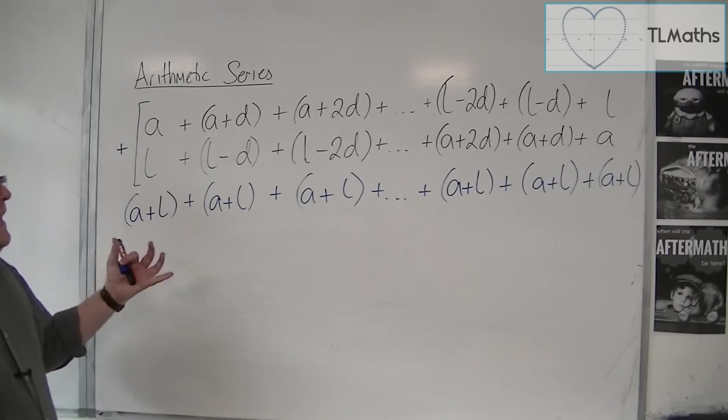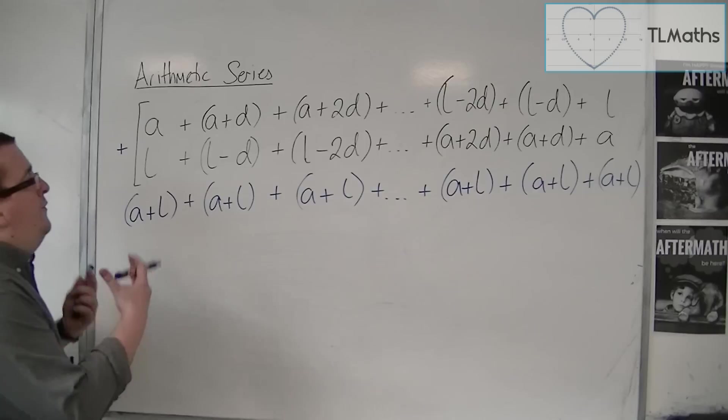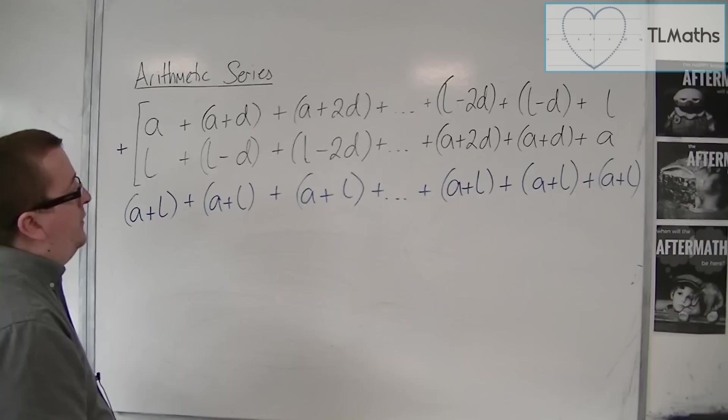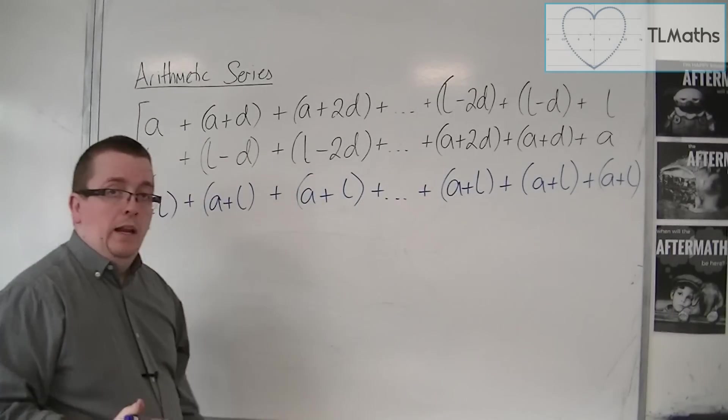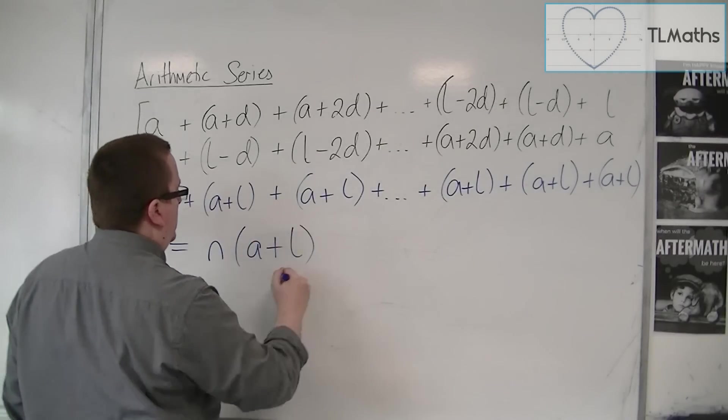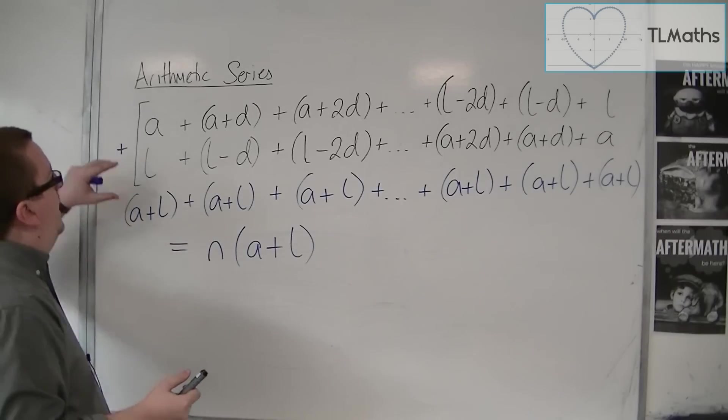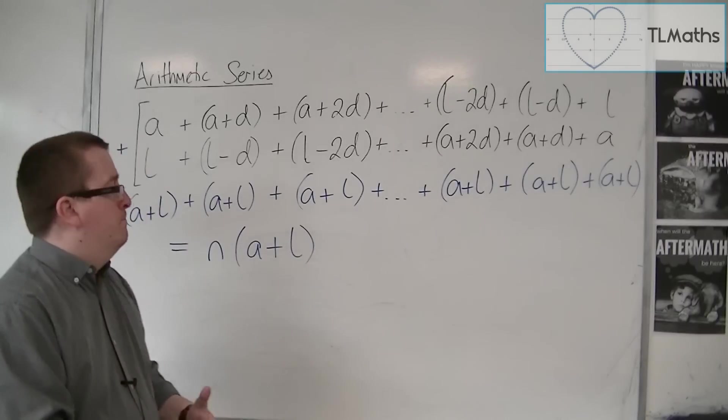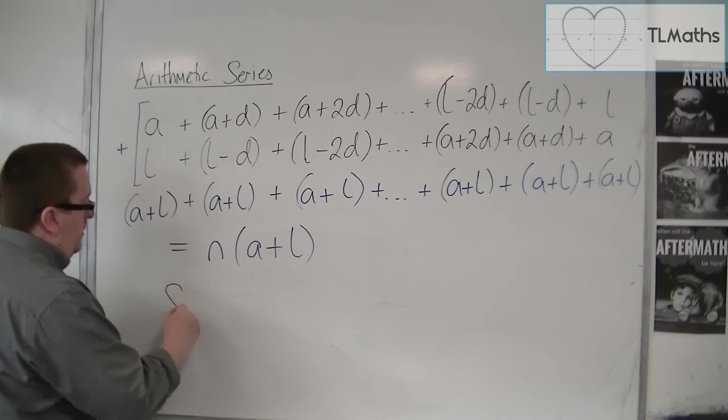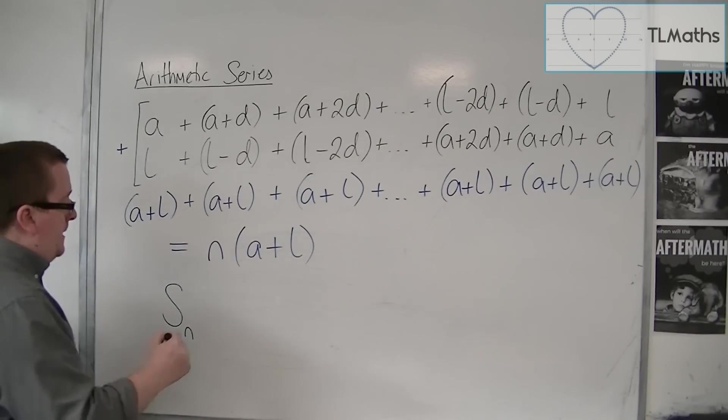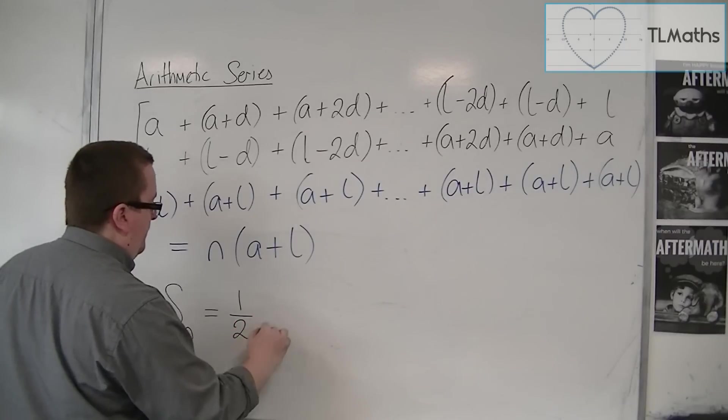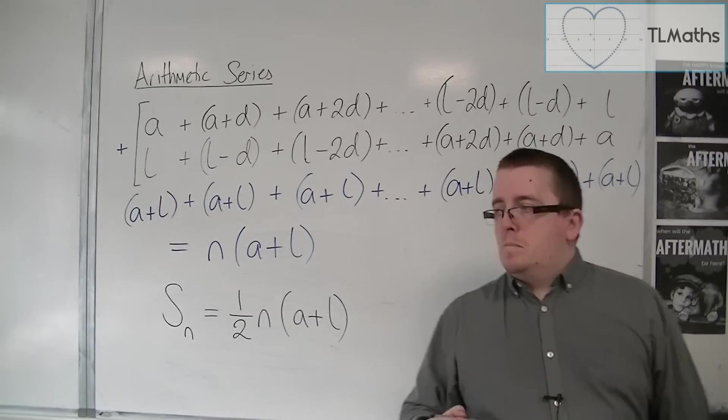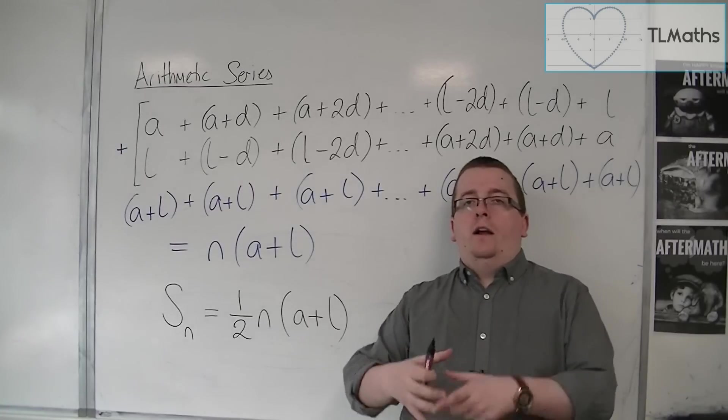How many a plus L's do I have? Well, if I was going from the first term to the last term and there were n terms in the series, then I have n lots of a plus L here. But because I wrote down the same series twice and added them together, I've actually got twice as much as what I need. So in actual fact, the sum of the first n terms of an arithmetic series is one-half n times a plus L. This is the formula that we need, which tells me what a series adds up to.